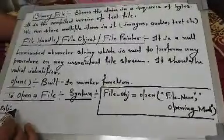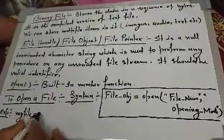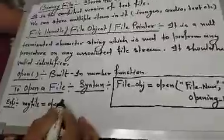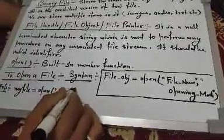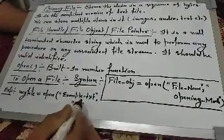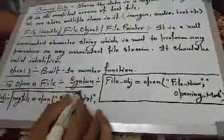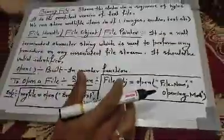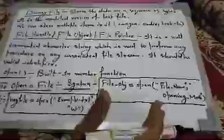Example के तौर पर: माल लीजिए file pointer का नाम my_file है, तो my_file = open('example.txt', 'w') — यहाँ example.txt एक text file है और 'w' opening mode है यानी write mode। इसका मतलब है कि हम उस file को open करने के बाद उसमें कुछ contents write करेंगे। Opening mode के बारे में अगले video में discuss करेंगे।